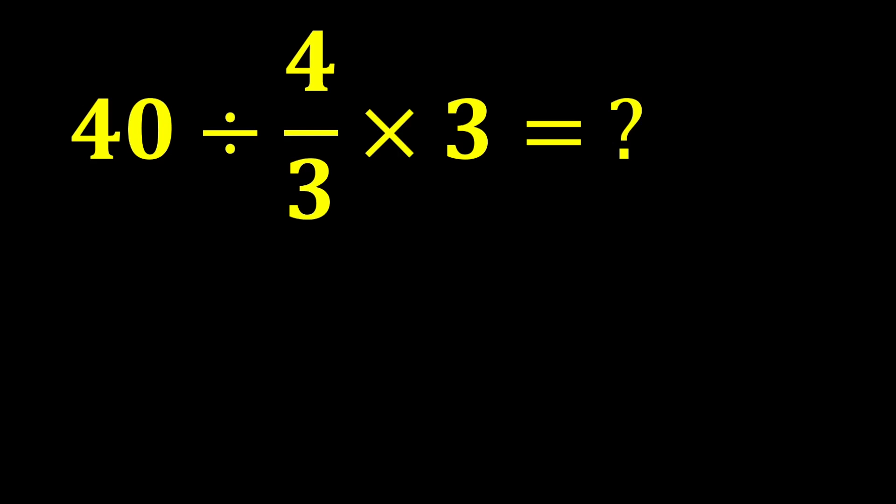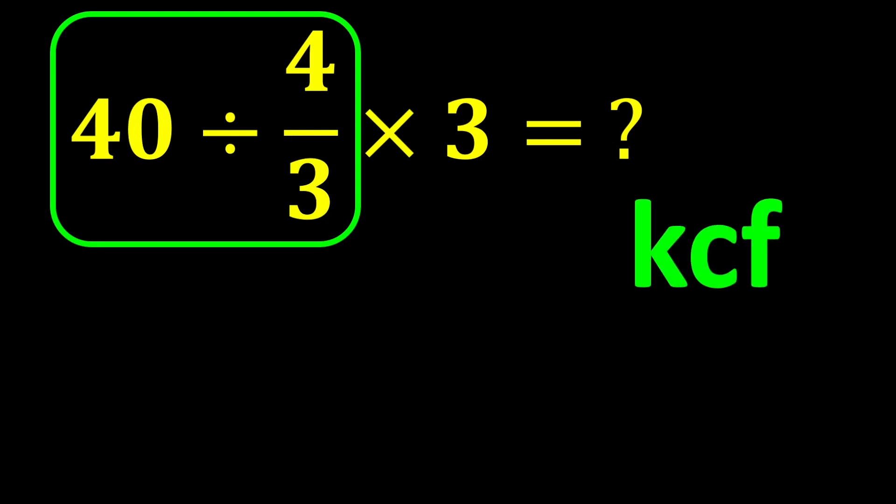Now, in this expression, if we move from left to right, we first reach division. So we perform the division first. 40 divided by 4 over 3. To solve this part of the question, we use the KCF rule.